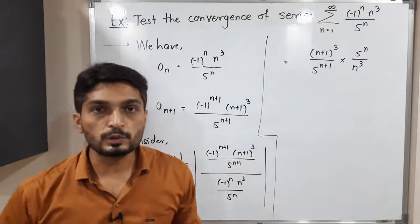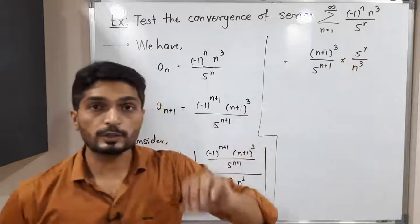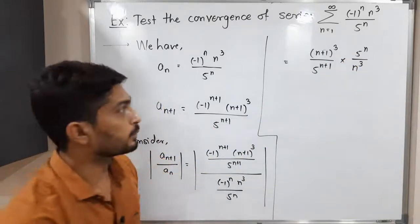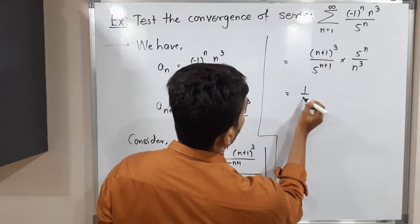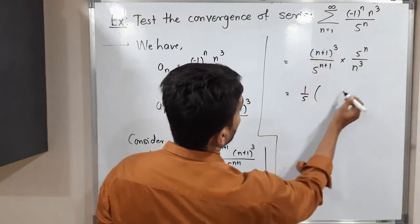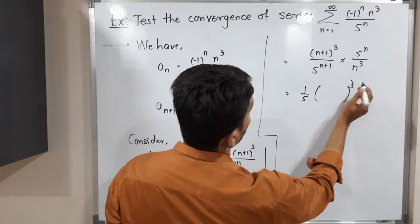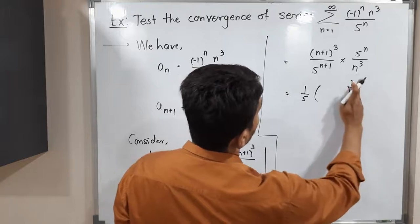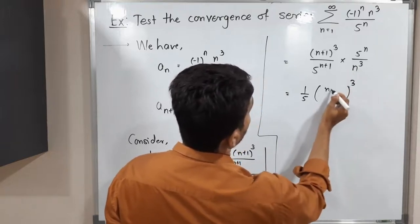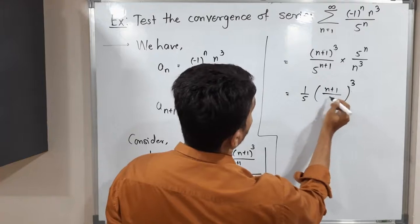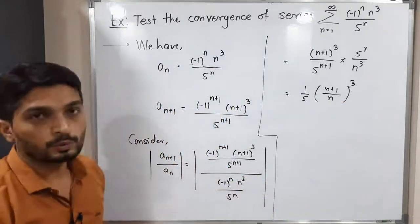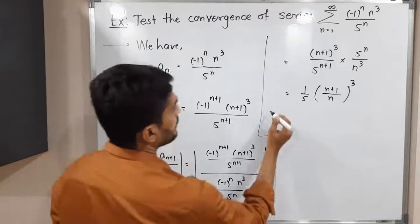Now 5^(n+1) and 5^n: 5^n cancels, leaving simply 1/5. So the expression becomes (1/5) · ((n+1)/n)³, which we can write as (1/5) · (1 + 1/n)³.